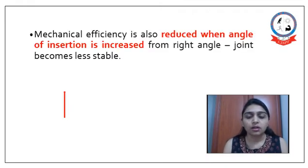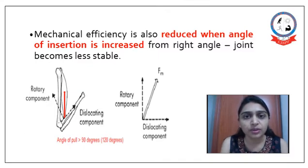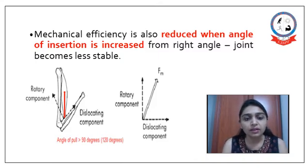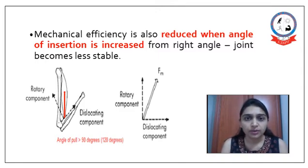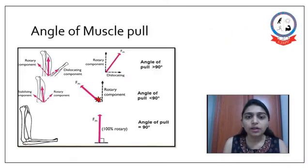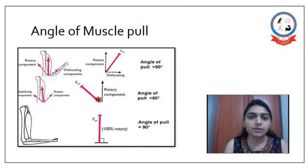In the same way, if the angle is more than 90 degrees, then mechanical efficiency is also reduced, and the joint becomes less stable. Here we can see that the rotatory and dislocating components — that is vertical and horizontal components — are again divided, where more of the dislocating work will occur and it will make the joint more unstable. So if the angle is less than 90 degrees, more of the stabilizing component works; if it is more than 90 degrees, more of the dislocating component will occur, reducing the efficiency of muscle pull.